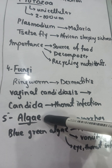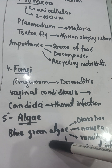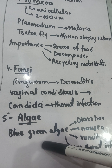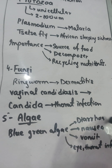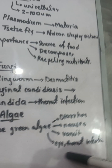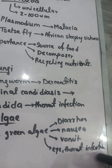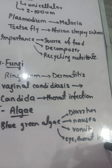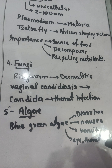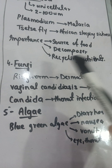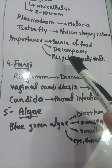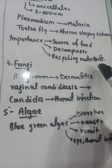The last microorganism is algae. The most important algae present in water is blue-green algae. Blue-green algae can cause diarrhea, nausea, vomiting, and various eye and throat infections. Their importance is similar — they serve as a source of food, act as decomposers, and help recycle nutrients back to the water.